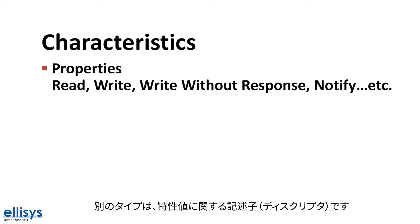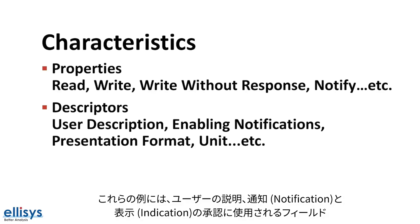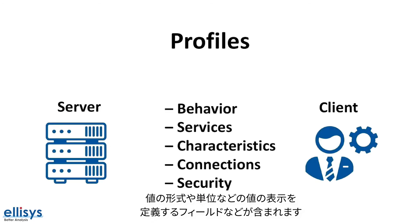Another type is descriptors, which are used to contain related information about the characteristic value. Examples of these include the user description, fields used for subscribing to notifications and indications, and a field that defines the presentation of the value, such as the format and the unit.